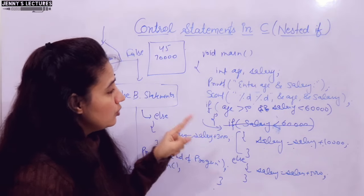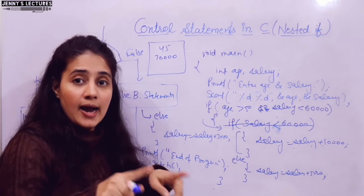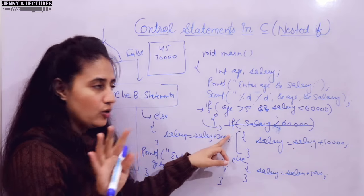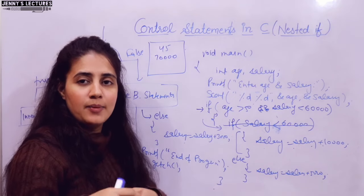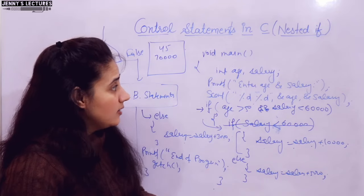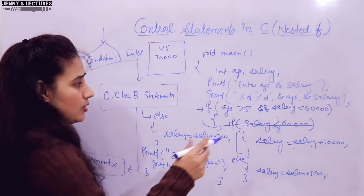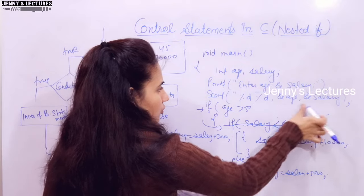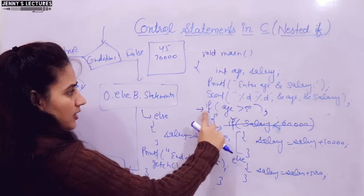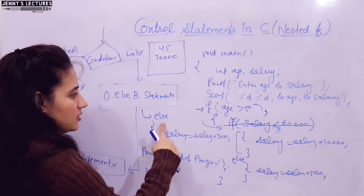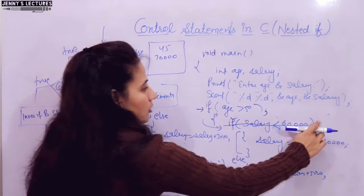Your assignment: take three numbers and find the maximum among them using nested if — you cannot use the logical AND operator. Write your answer in the comments or send me a screenshot on Instagram. Also note: if you put a semicolon after the if statement while an else follows it, you will get an error — 'misplaced else' or 'else without a previous if'. Do not terminate an if with a semicolon if it has a corresponding else.